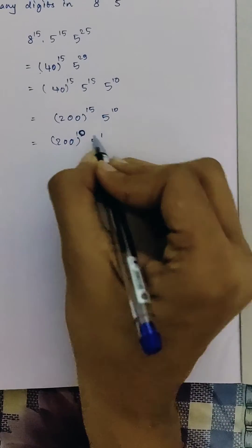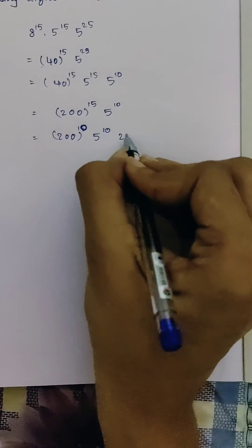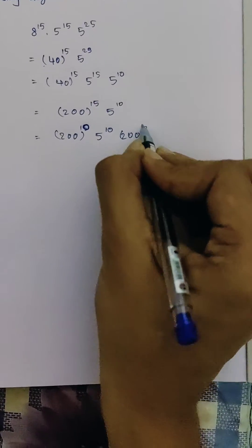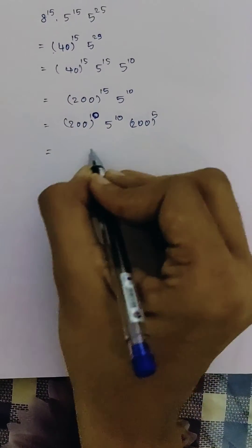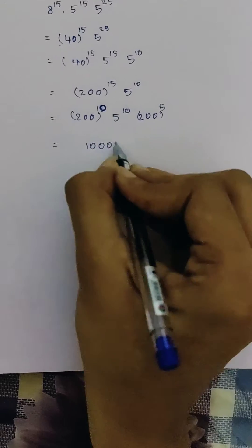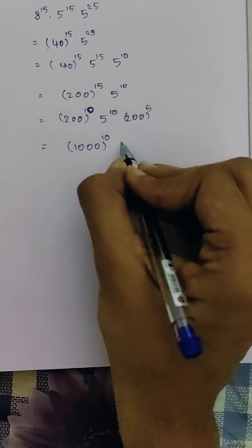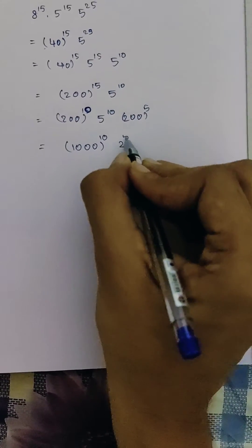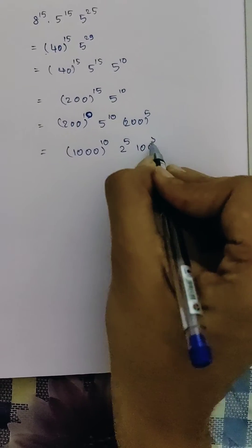So let's write it. Now as 200 and 5 has the same power we can write it as 1000 power 10 into 200 power 5, that is 2 power 5 into 100 power 5.